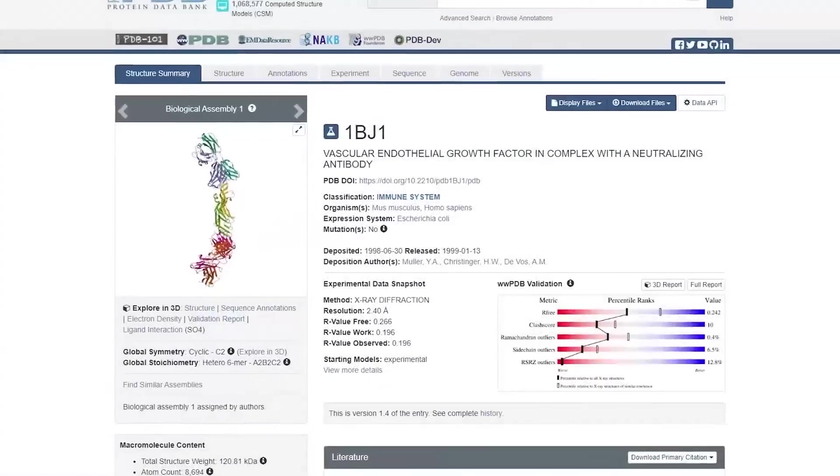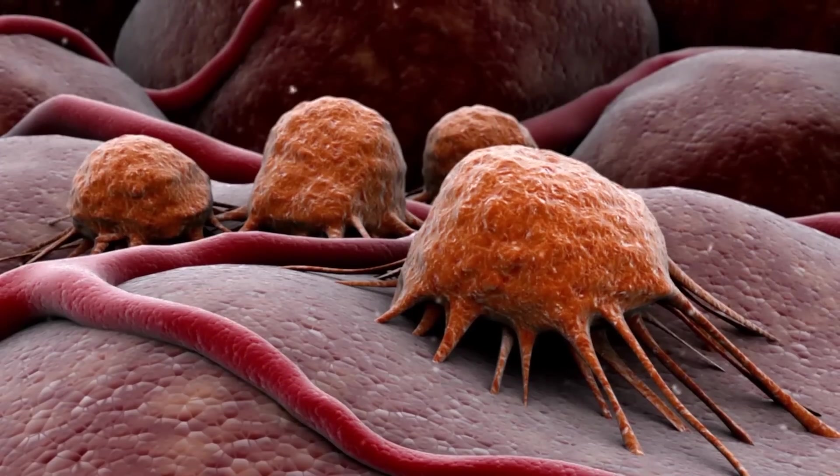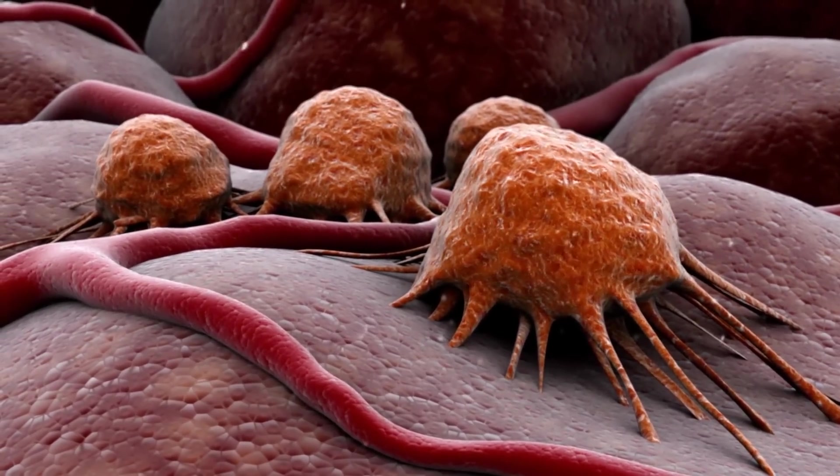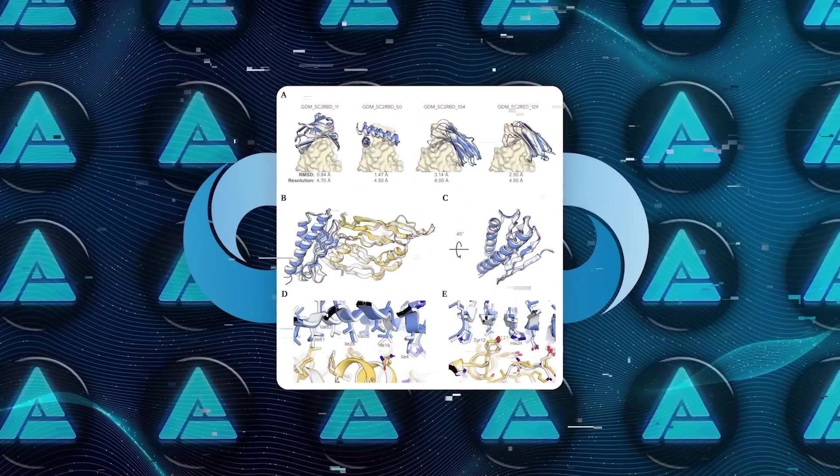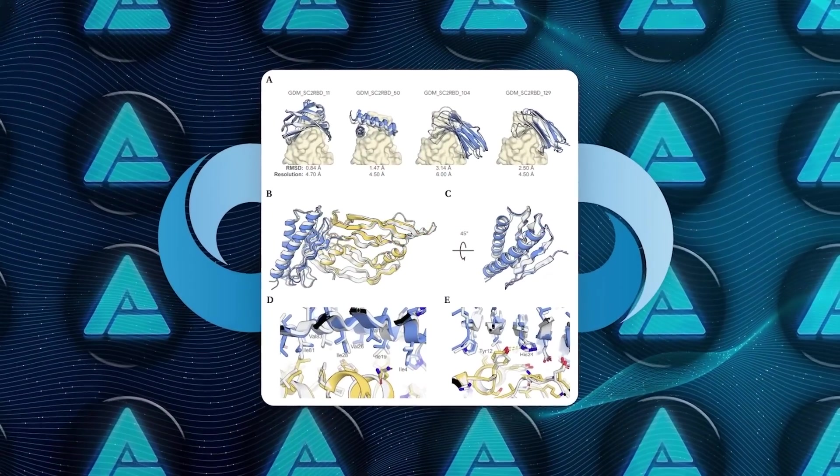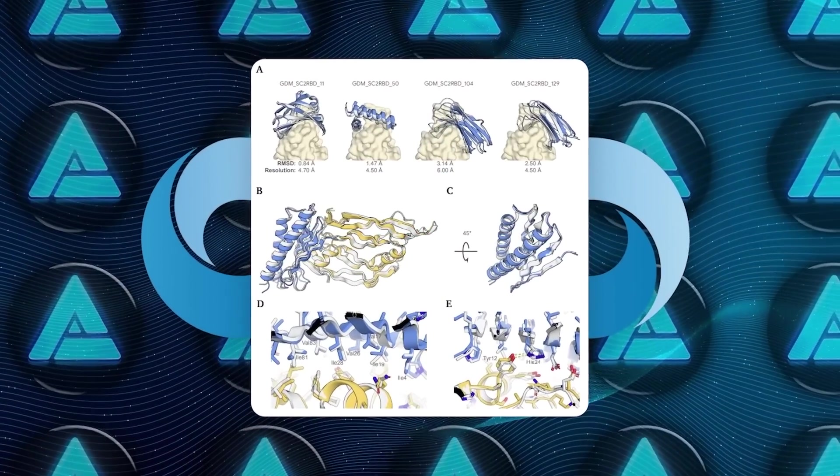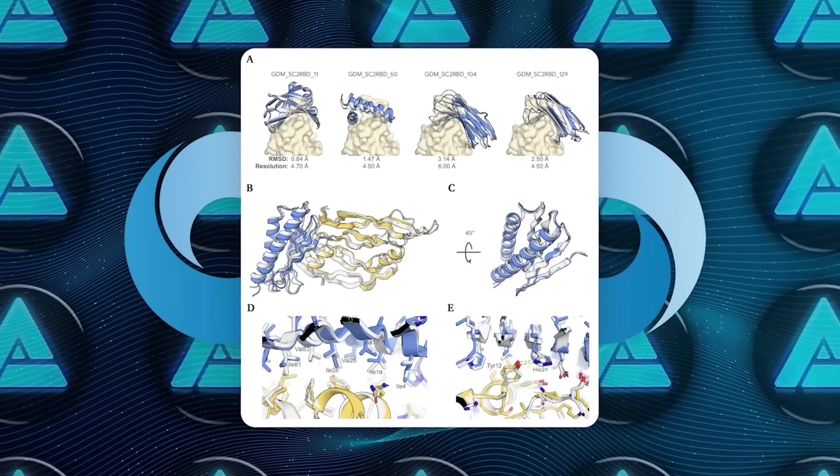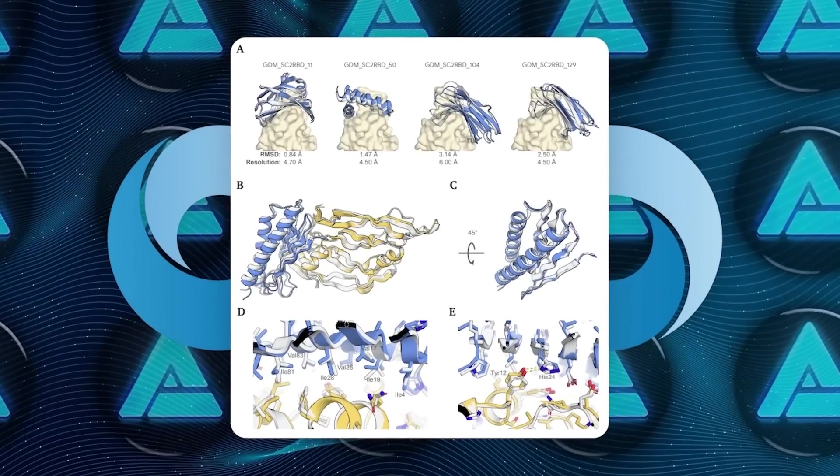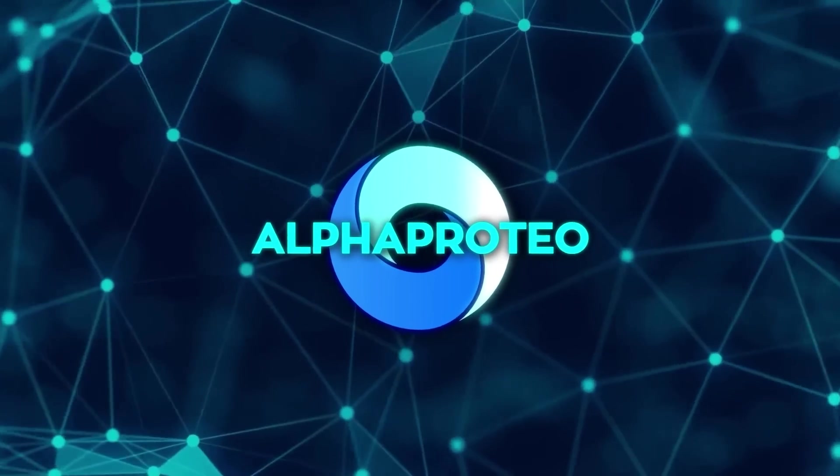For example, let's take VEGF, which is a protein linked to cancer and diabetes complications. For the first time ever, an AI system, AlphaProteo, designed a protein binder that successfully binds to VEGF. That alone is a huge milestone. And it's not just one-off successes.